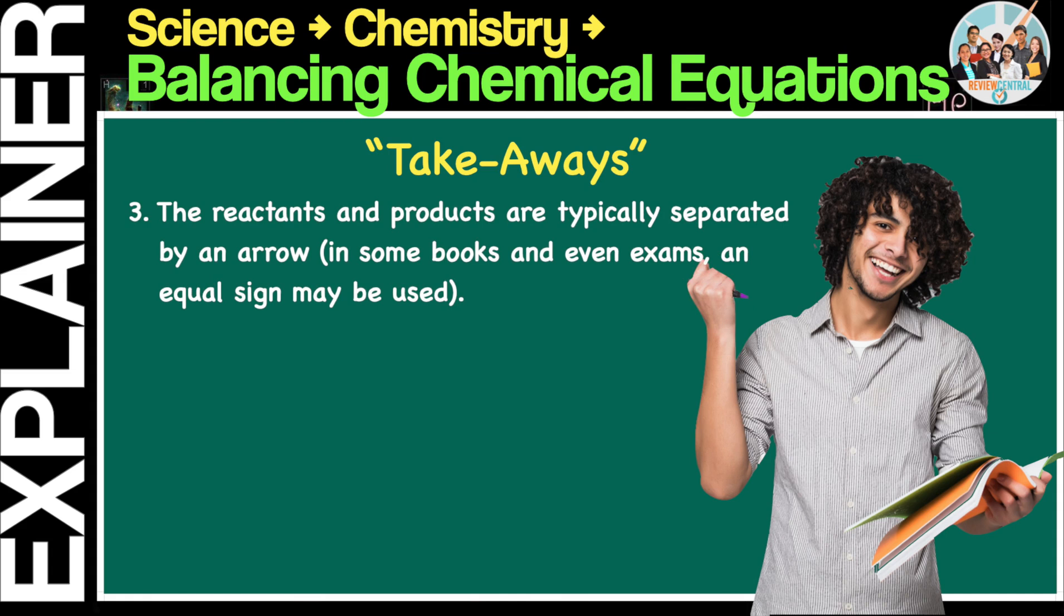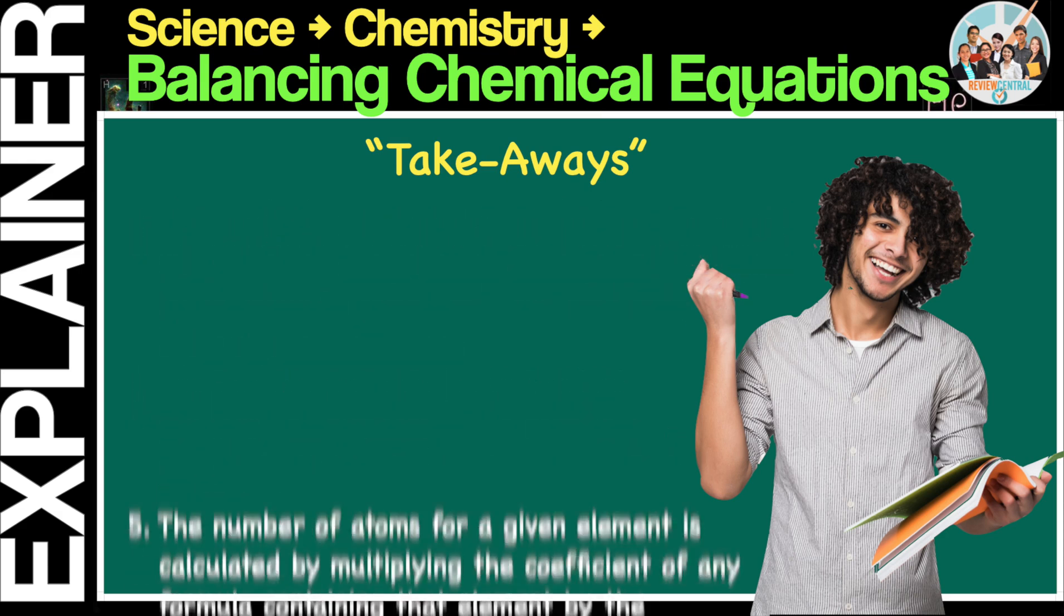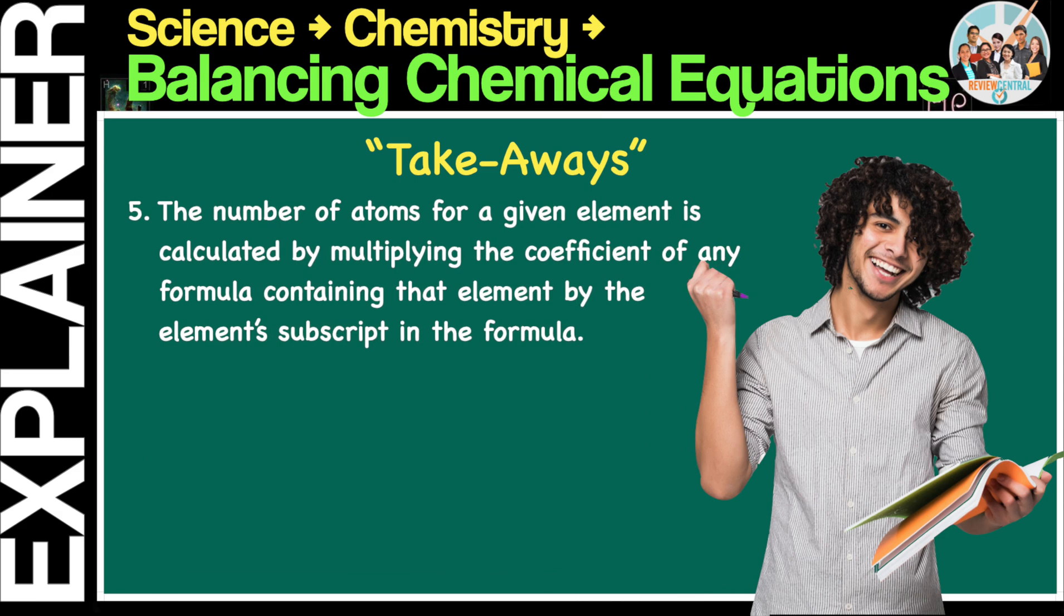4. You may find numbers in the reactants and products. Leading numbers are called coefficients, while the smaller and slightly lower lagging numbers are called subscripts. 5. The number of atoms for a given element is calculated by multiplying the coefficient of any formula containing that element, by the elements subscript in the formula.